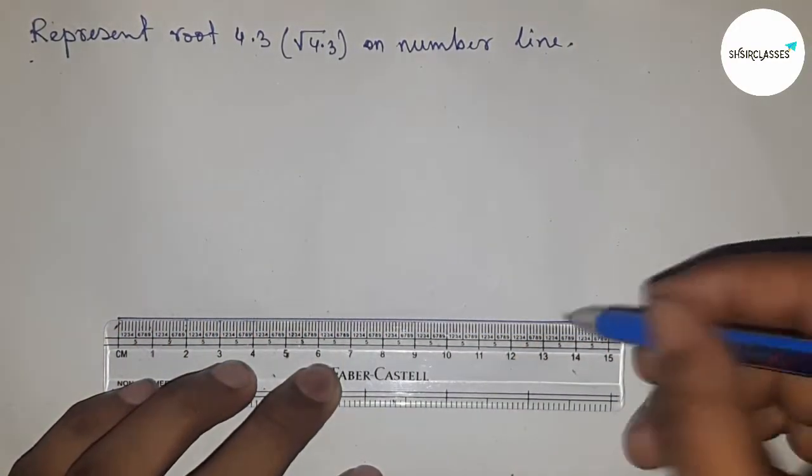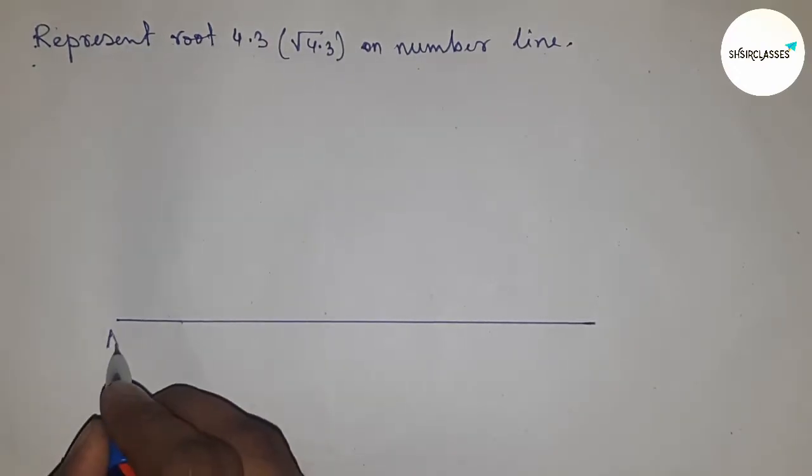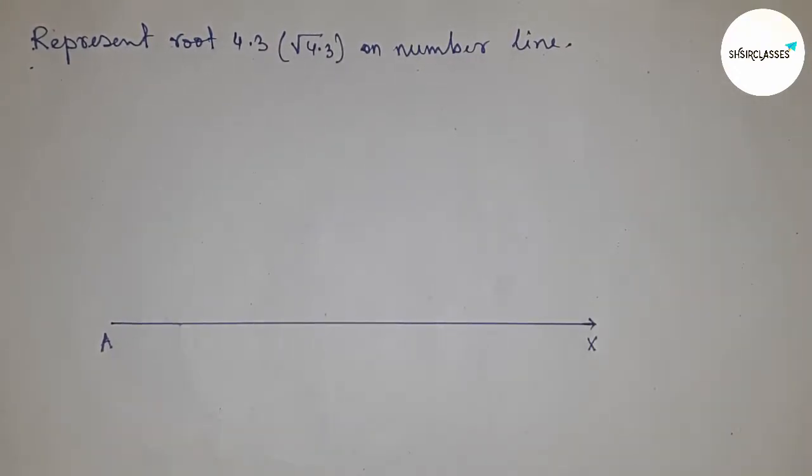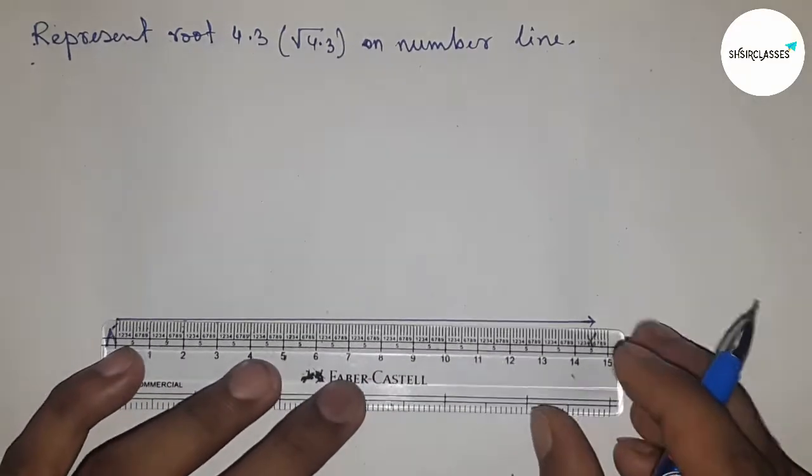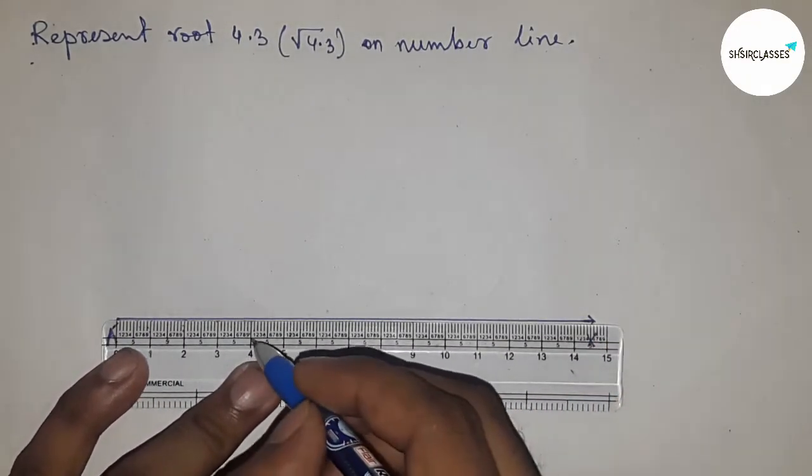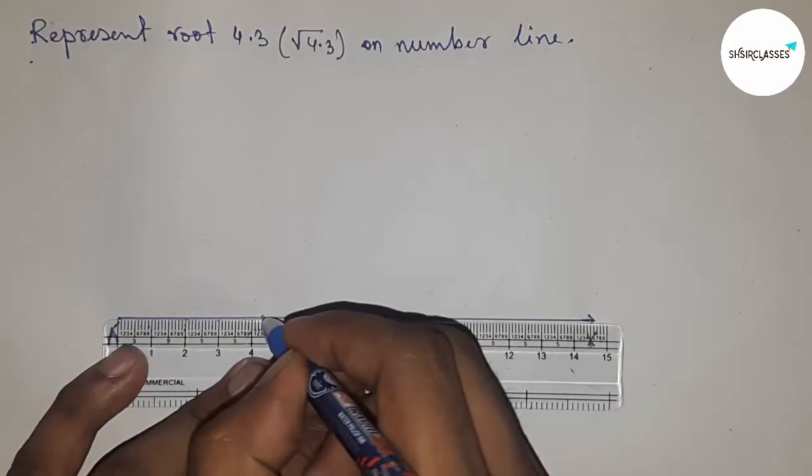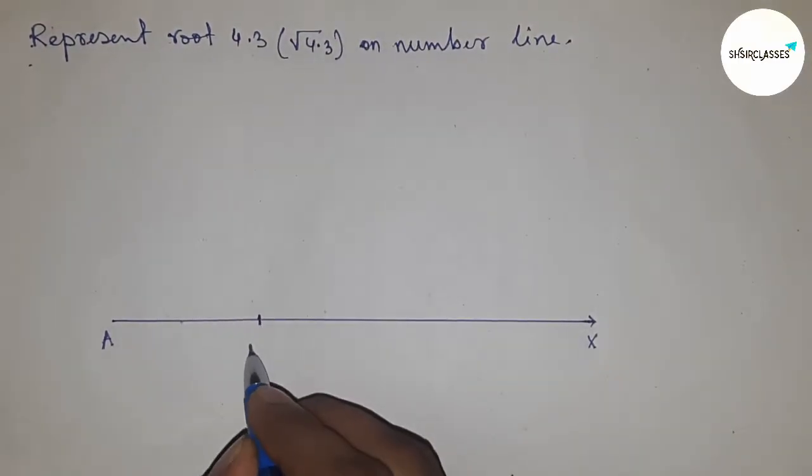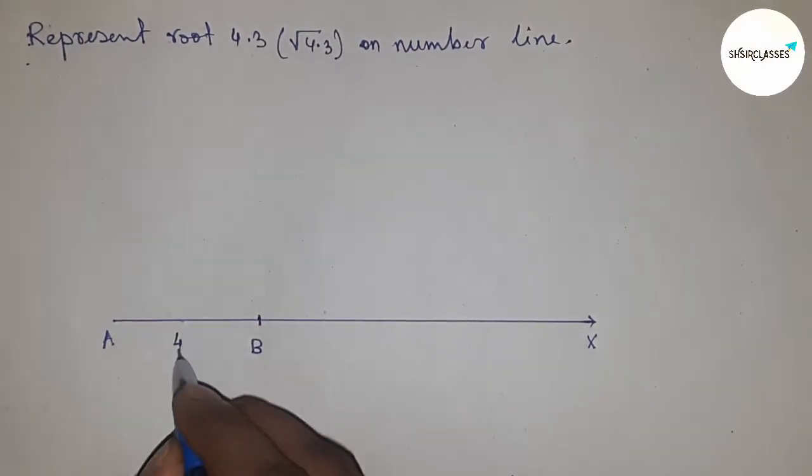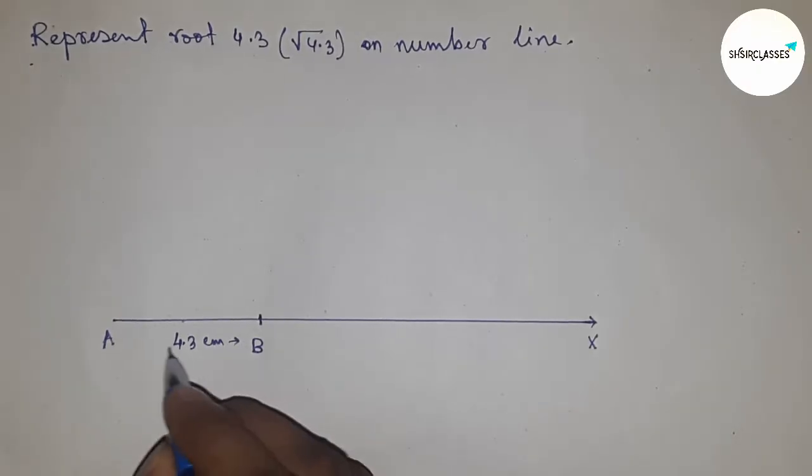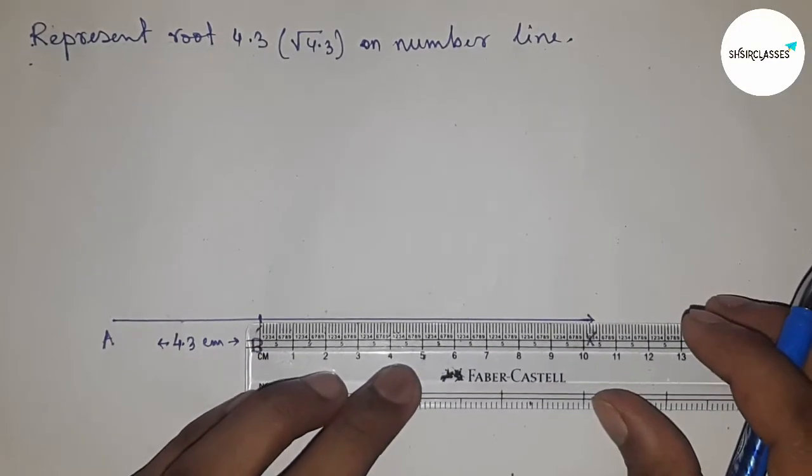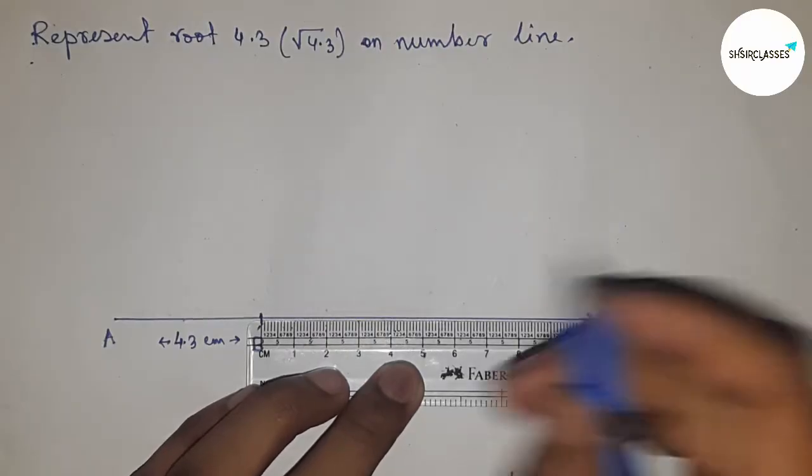Next, taking a length of 4.3 centimeters by scale and marking point B. So AB equals 4.3 centimeters. Next, mark the numbers on the point on the line BX.